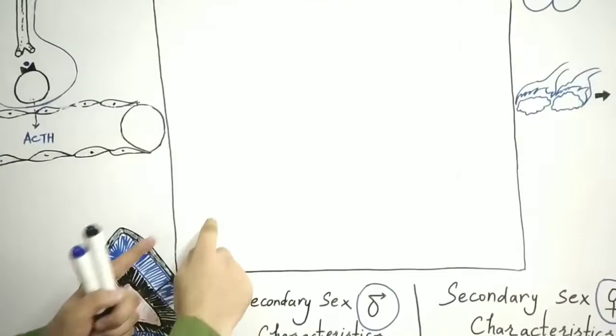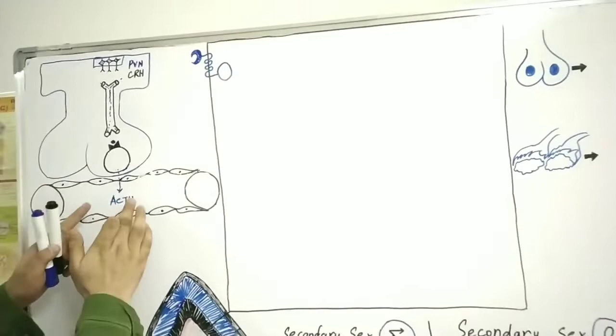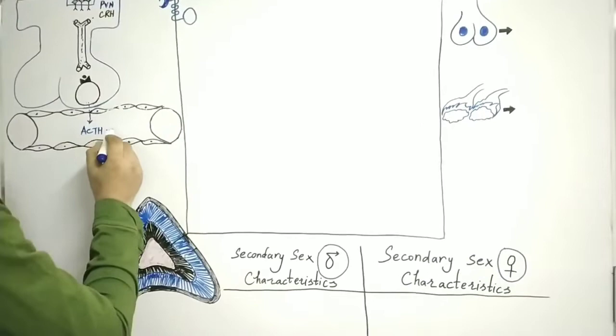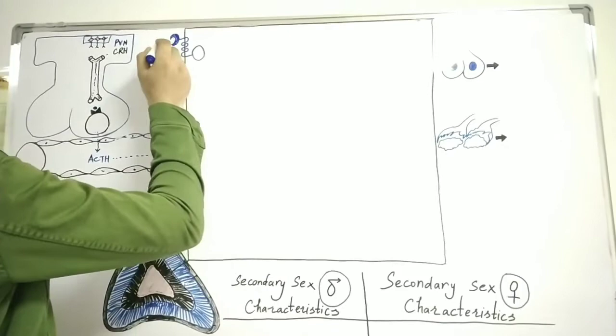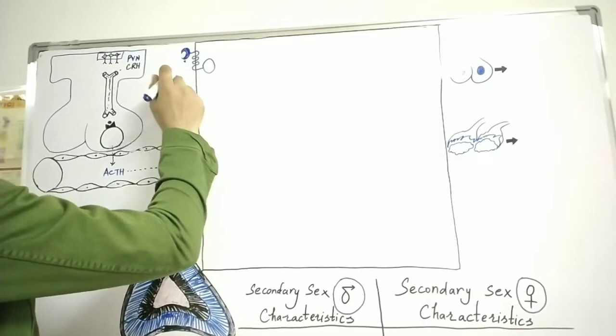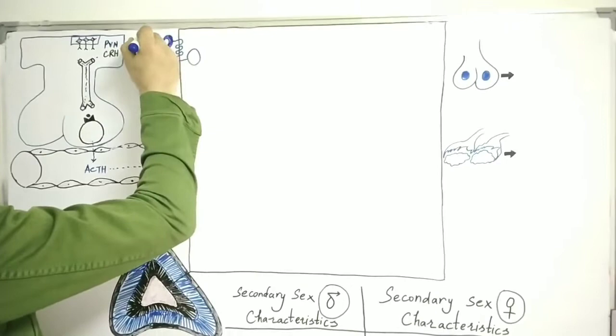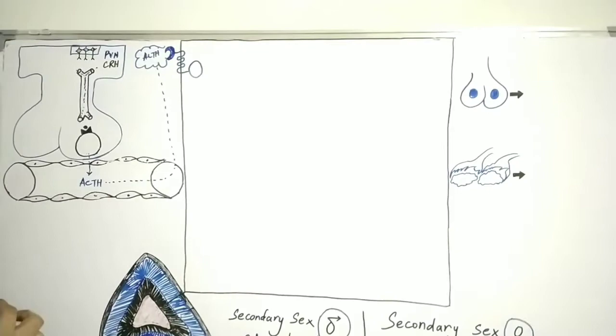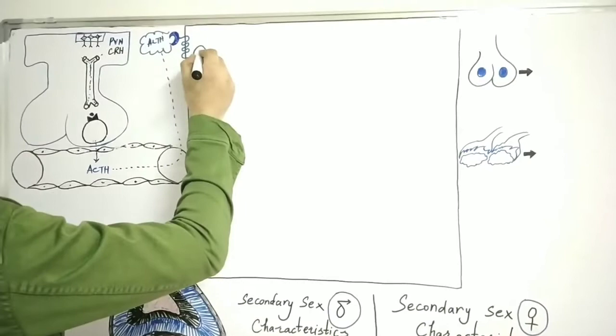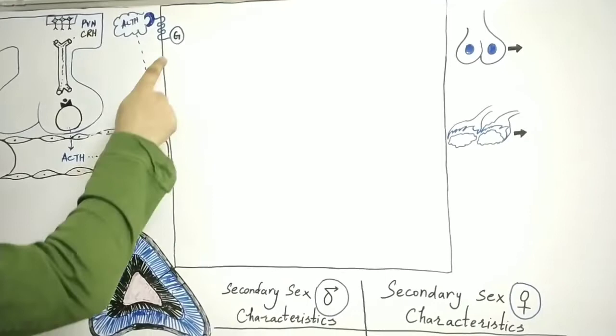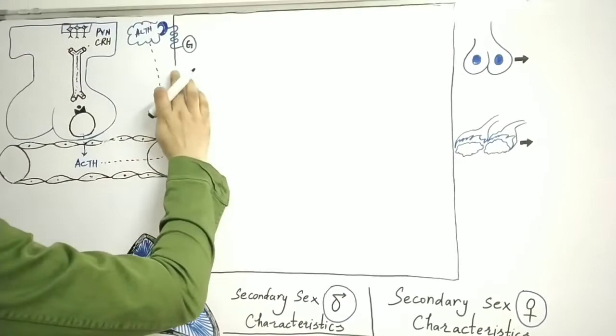Here I have zoomed in on one cell of the zona reticularis. ACTH from the blood stimulates the receptor present on the zona reticularis cell. This receptor is a G-protein coupled receptor. ACTH binds to this receptor, and the receptor becomes activated, activating the G protein.